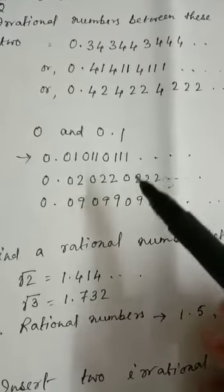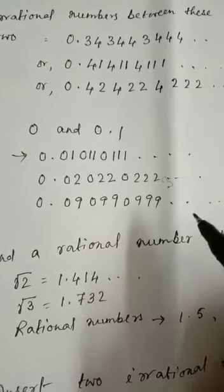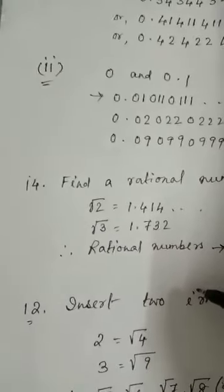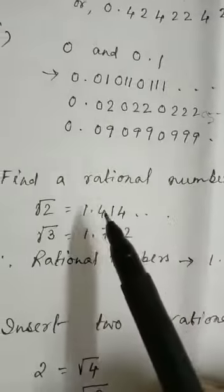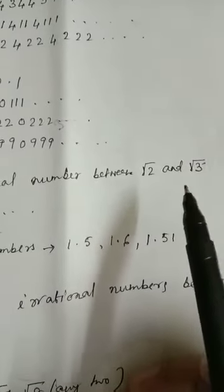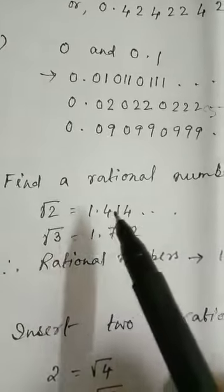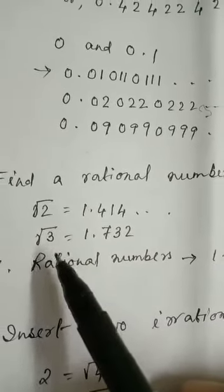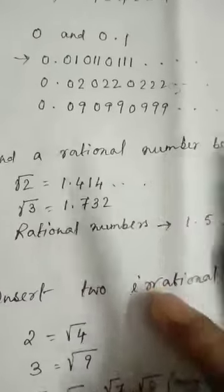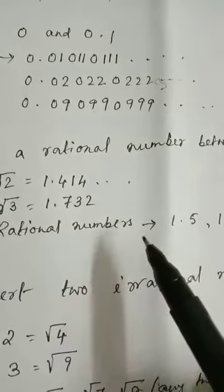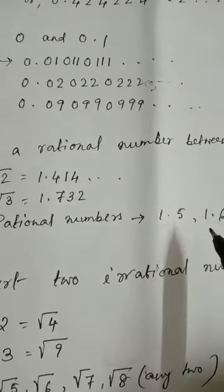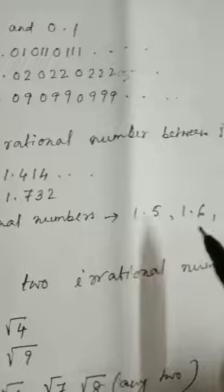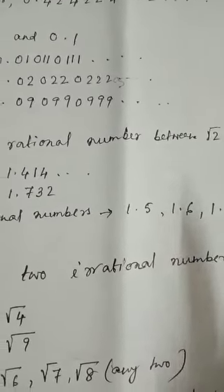All these numbers are non-terminating, non-recurring numbers. Next question — I will take number 14. Find a rational number between root 2 and root 3. Root 2 you can write as equal to 1.414, and root 3 value is 1.732. So you have to find a rational number — any number between 1.4 and 1.7 you can take. You can take numbers like 1.5 or 1.6 or 1.51.